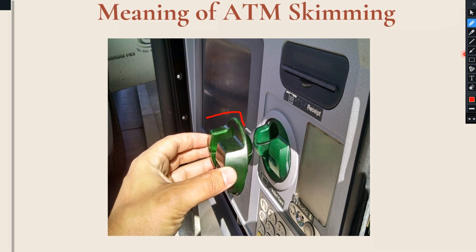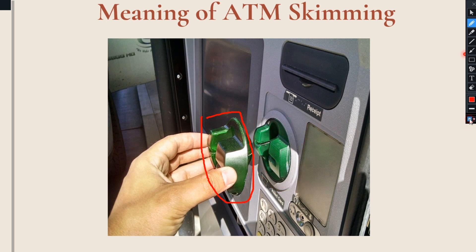This is the portable card reader which the fraudsters will insert over the original card reader. The function of this duplicate portable card reader is to read, steal, and extract the information which is hidden in the magnetic strip of our card. This duplicate portable card reader will store all the information hidden in the magnetic strip, and in this way the fraudsters will collect the information of the victims through this portable card reader.